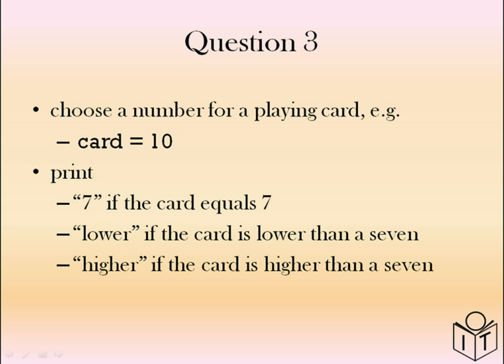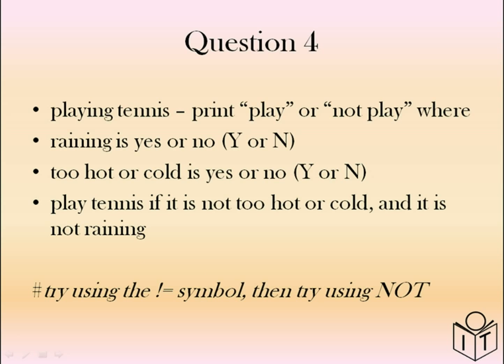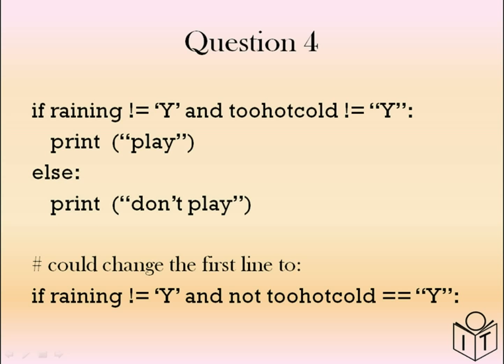Question three: we chose a card number — if it equals seven, print 'seven'; if lower, print 'lower'; else print 'higher'. This is an if/elif/else structure. Question four — deciding to play tennis — uses the AND keyword. The condition is that it's not raining AND it's not too hot or cold; if true, print 'play'; else print 'not play'. You could also change this to use AND NOT rather than not-equals — both approaches work.